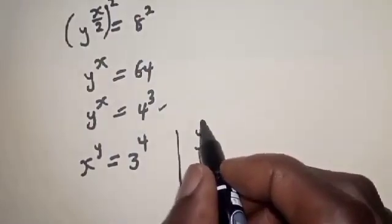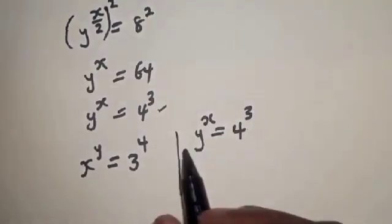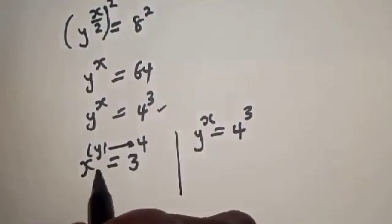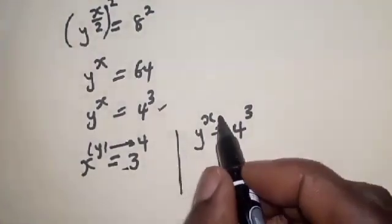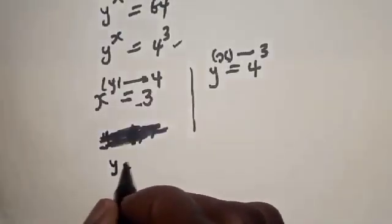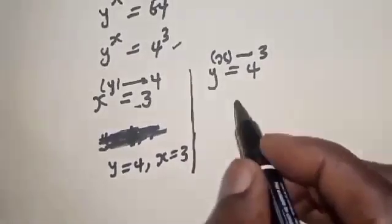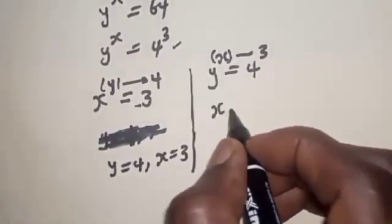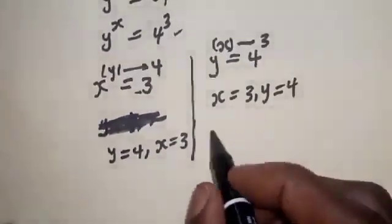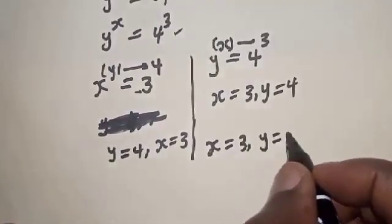We also have s raised to power y equal to 81, which is 3 raised to power 4. Comparing y raised to power s equals 4 raised to power 3: the base gives y equals 4 and the exponent gives s equals 3. Confirming from s raised to power y equals 3 raised to power 4: s equals 3 and y equals 4. So our final answers are s equals 3 and y equals 4.